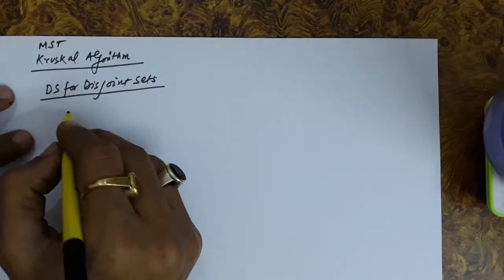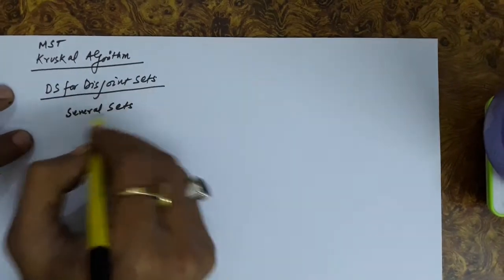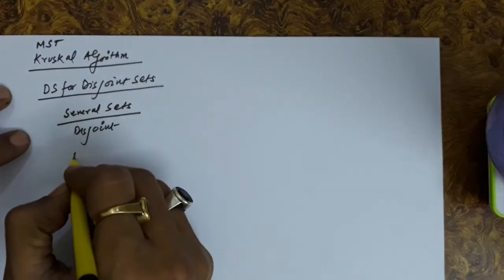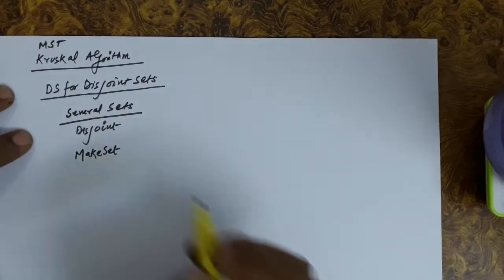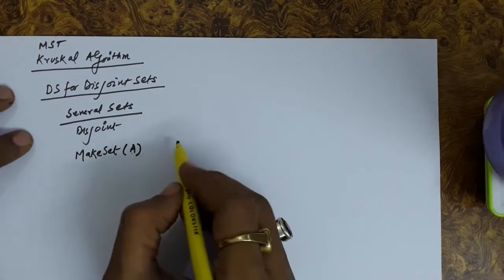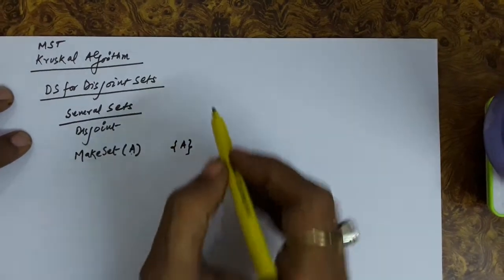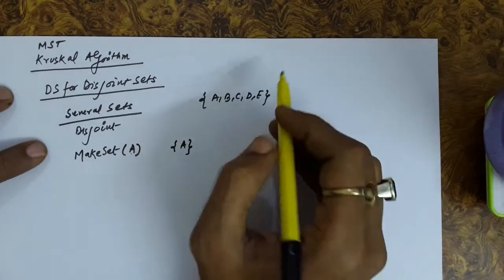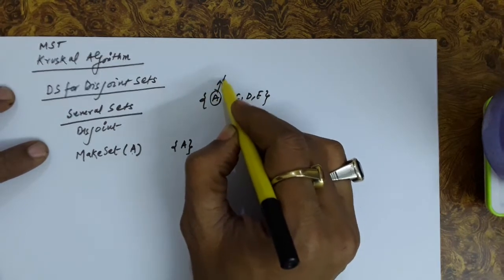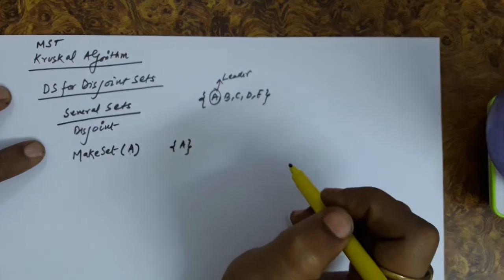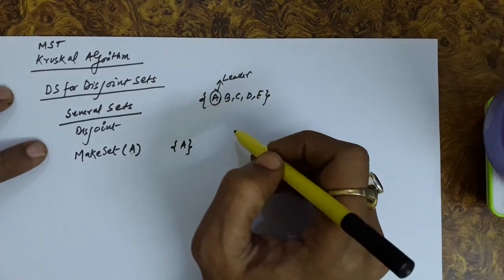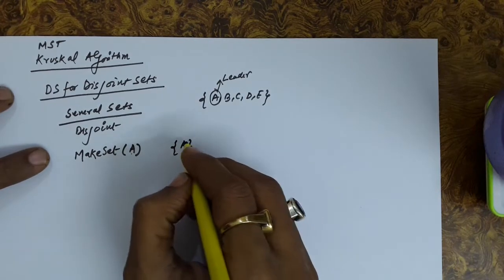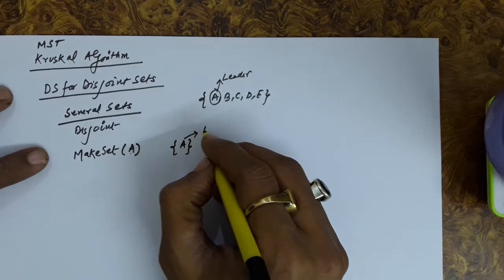Disjoint set data structures means we have several sets, and each of these sets are disjoint in nature — there will be no common element between these sets. The operations we can perform include the make set operation, which creates a set with a given element. In disjoint sets, one element is designated as the leader of the set, and there will be only one leader per set. So the make set operation designs a set and simultaneously sets that element as the leader of the set.